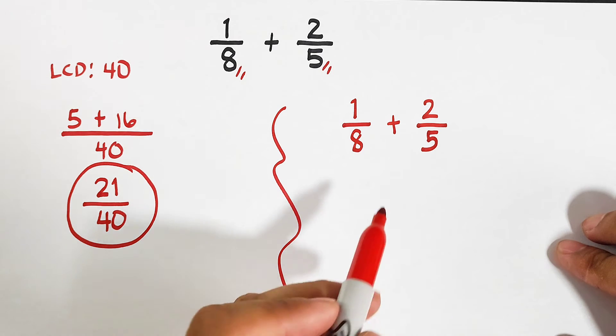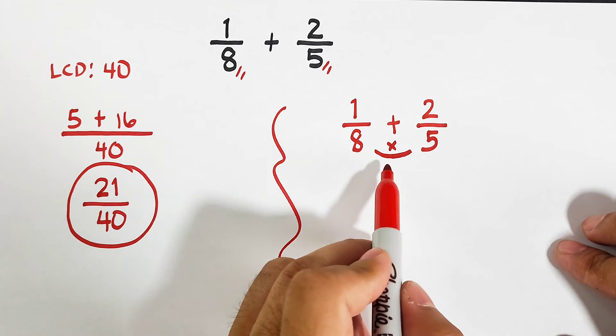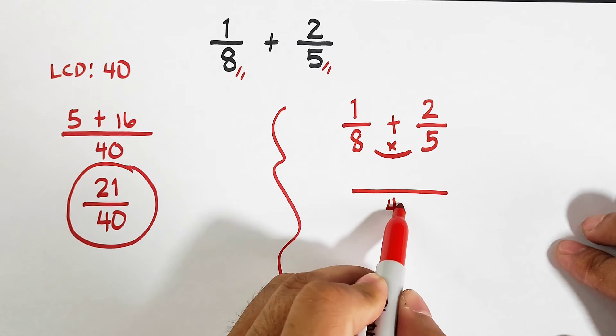First, what I need to do is I will multiply the denominators. 8 times 5 is 40.